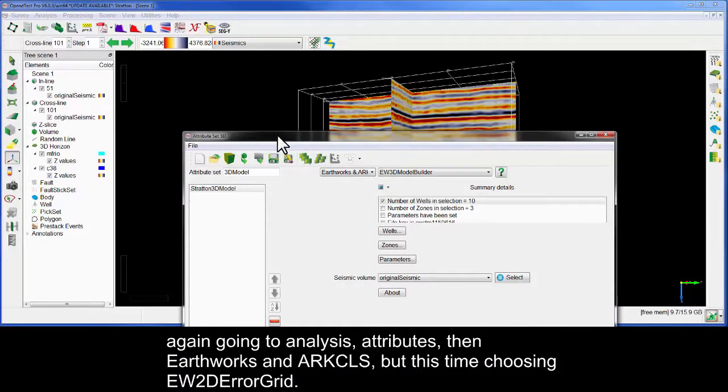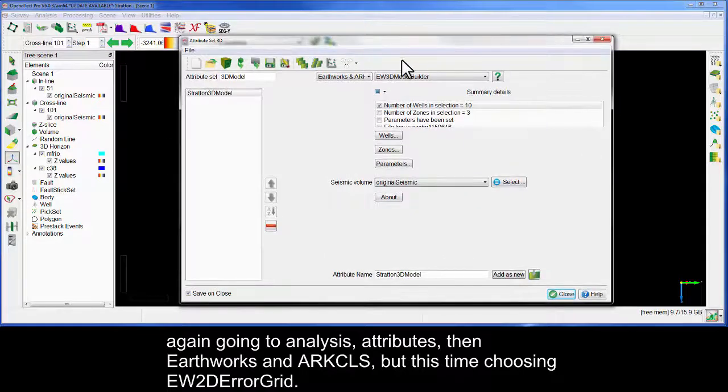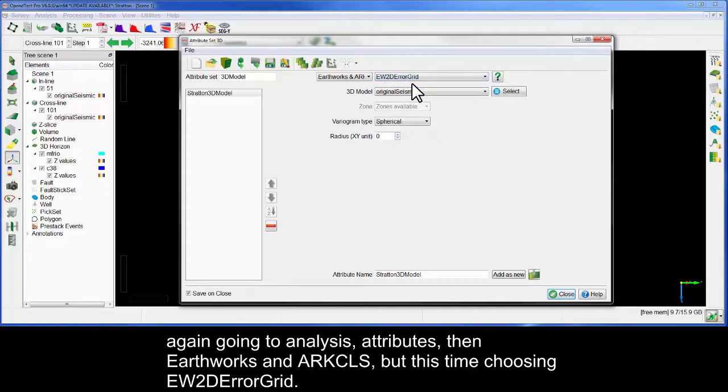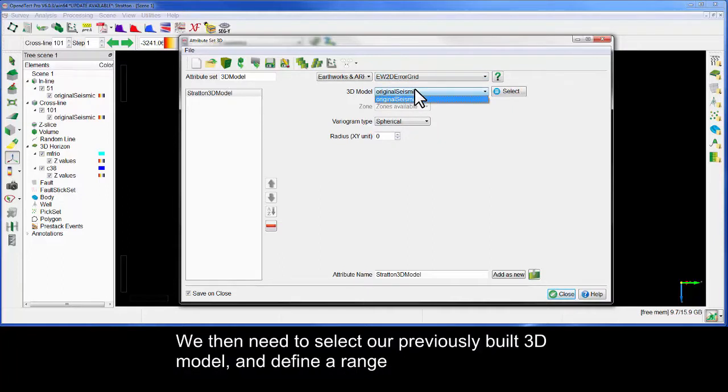Again, going to Analysis, Attributes, then Earthworks and ArcCLS, but this time choosing EW2D error grid, we then need to select our previously built 3D model and define a range.